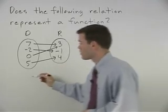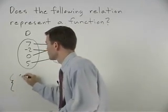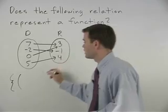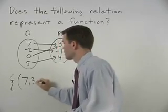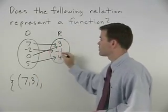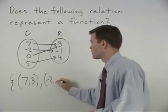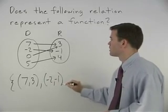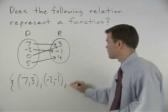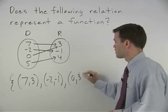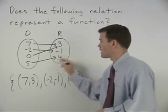So we have the following points: 7, 3, negative 2, negative 1, 0, 3, and 5, 4.